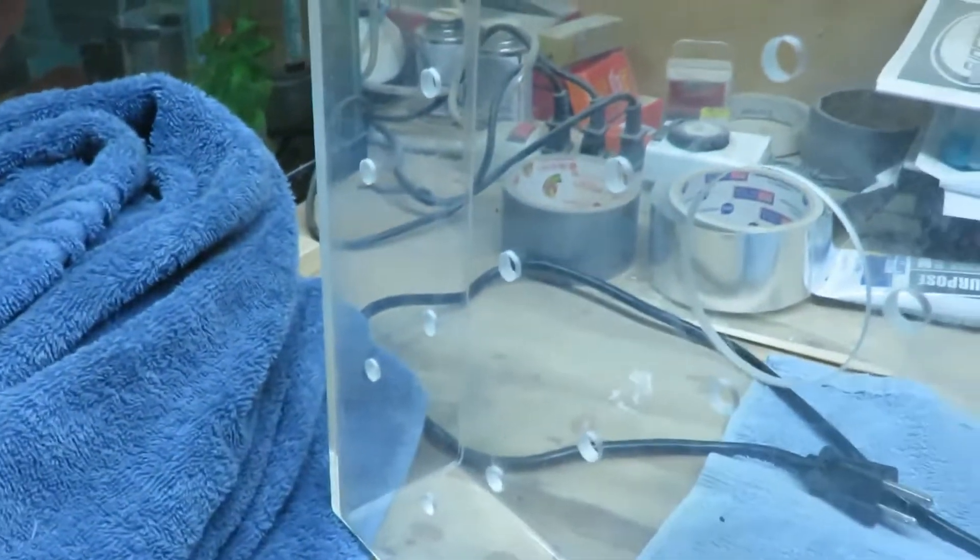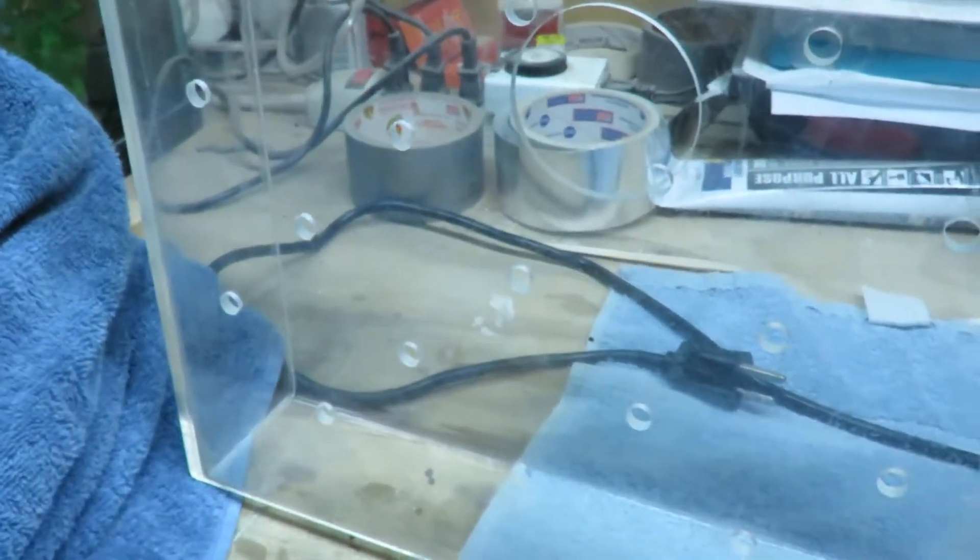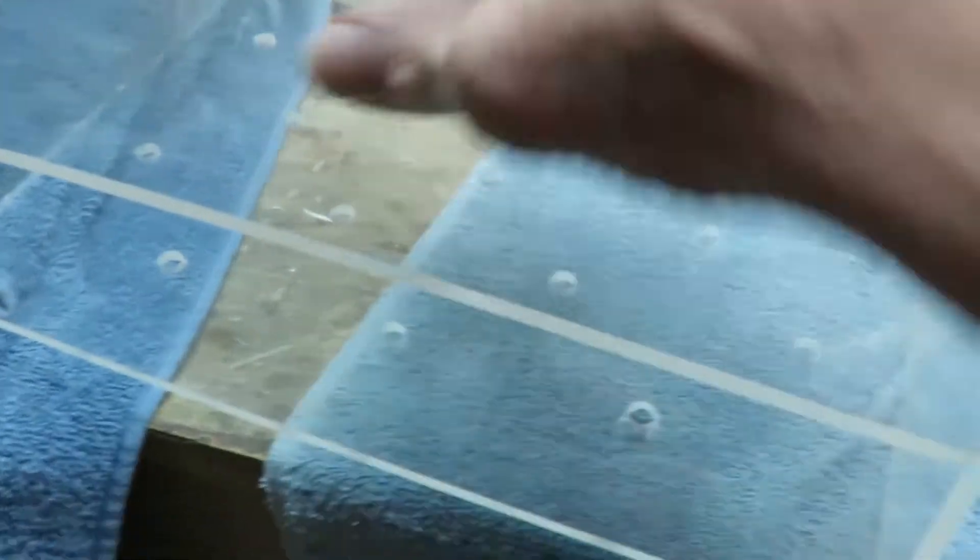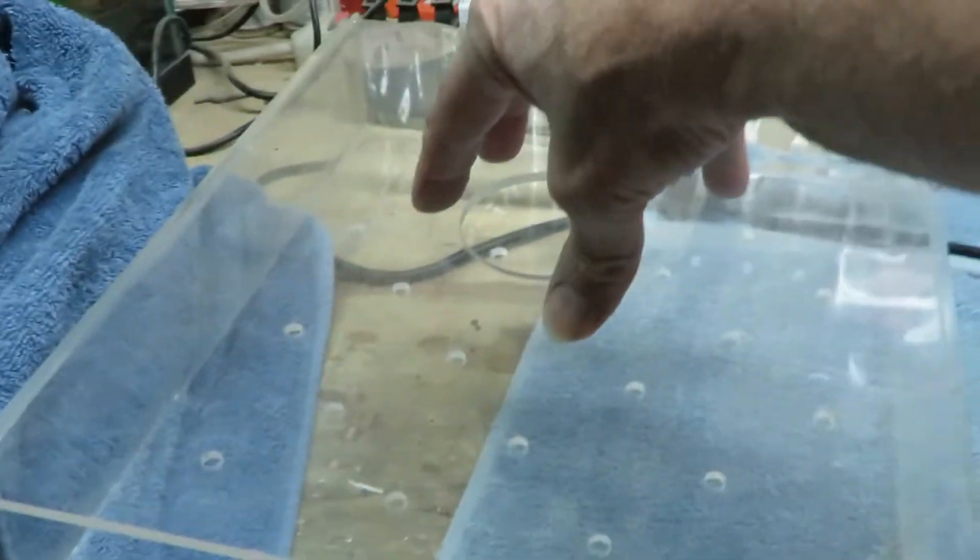These holes down here were somewhat plugged, so I drilled them out to the next size bigger. That way the water doesn't collect inside and goes on through. That's where it was leaking. Taking those off is a bit of a pain because of that 90 degree elbow up there.